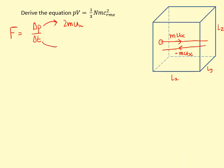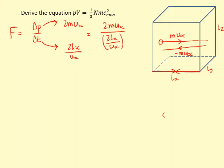Instead of using the time for the actual collision with the wall, we use the time between collisions — the time it takes to travel length 2lx and back. Dividing that distance by the speed ux gives the time. Putting this into the equation: 2mux divided by 2lx over ux. Because we're dividing by a fraction we flip and multiply, the twos cancel, and this simplifies to mux² over lx.